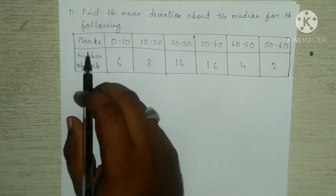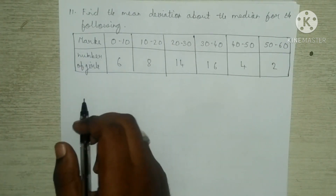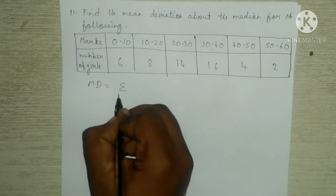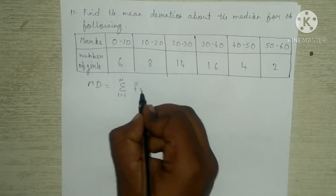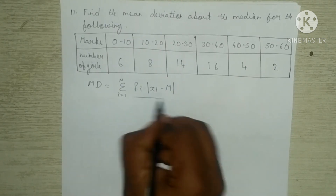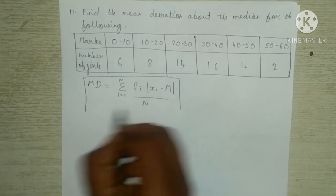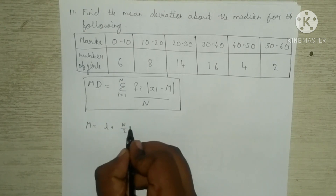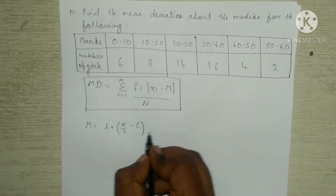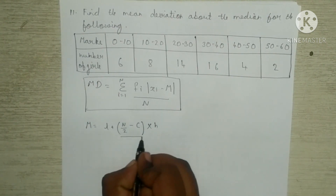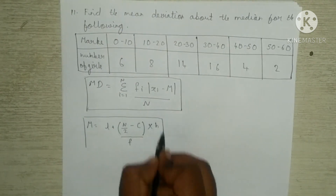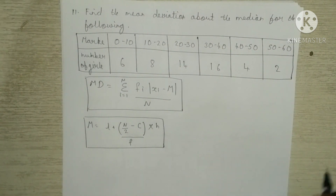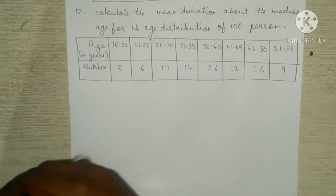For the eleventh question — find the mean deviation about the median for the following data, where marks and number of girls are given — the mean deviation formula is summation from i = 1 to n of f_i × |x_i minus M|, all divided by n. To find M, the median formula is: M = L + (N/2 minus C) × H / f. These two formulas are used to simplify the eleventh question.